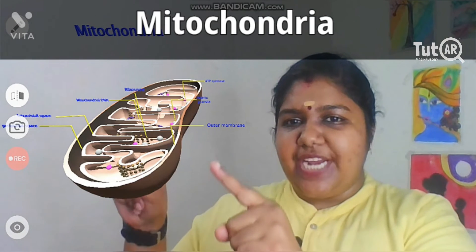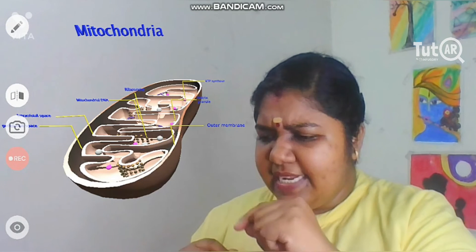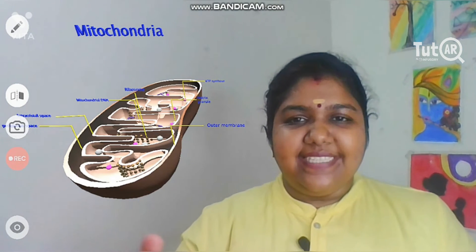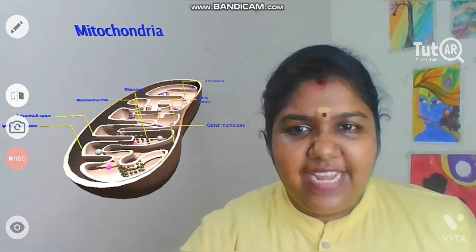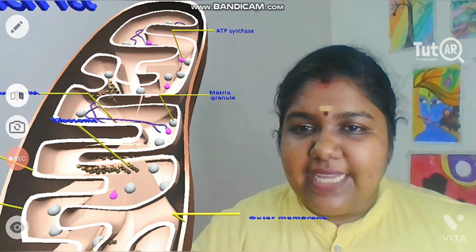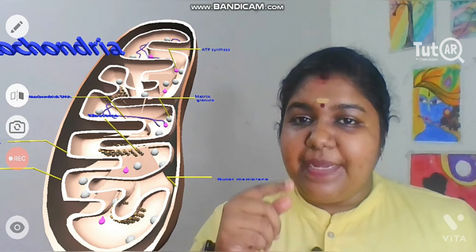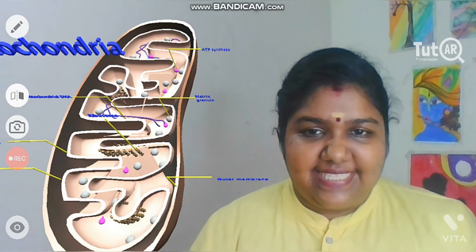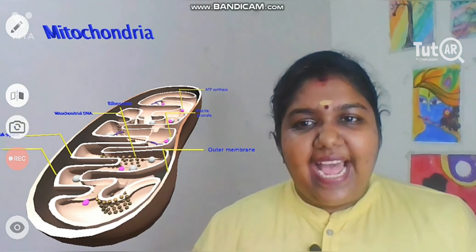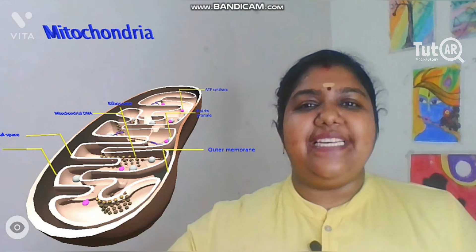Mitochondria is the powerhouse of the cell. It is a shoe-shaped, double-membranous structure. The inner membrane is highly convoluted. It is a unique organelle because it has its own DNA and its own ribosomes. It also has ATP synthase where ATP is synthesized. Mitochondria produces, stores, and distributes energy as ATP — whenever the cell needs energy, ATP is released from the mitochondria.